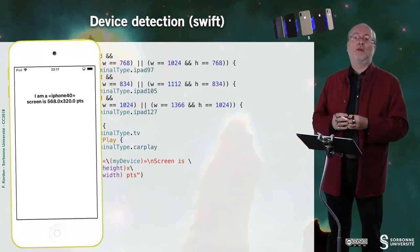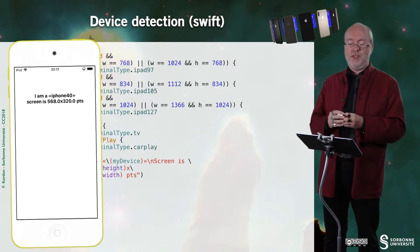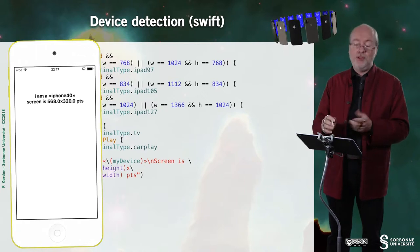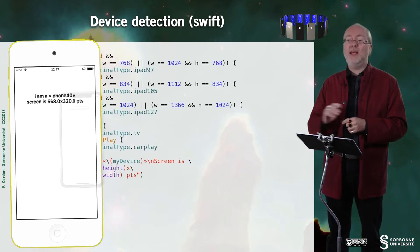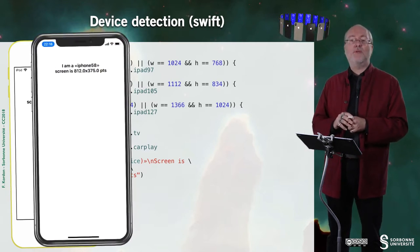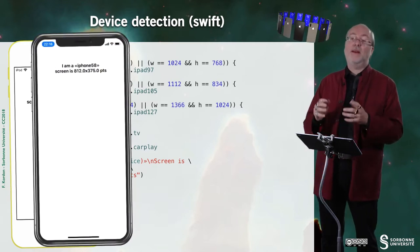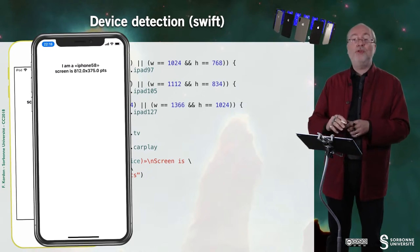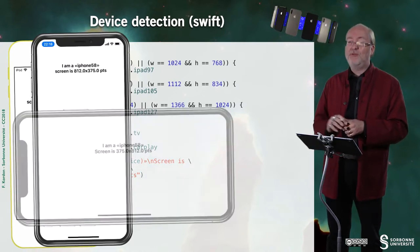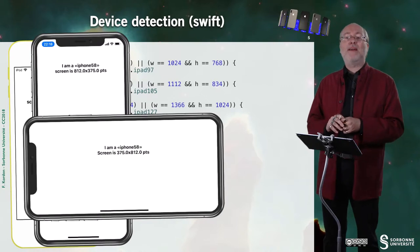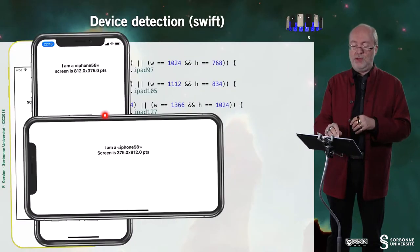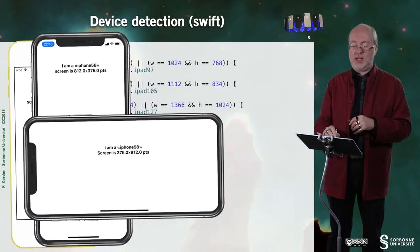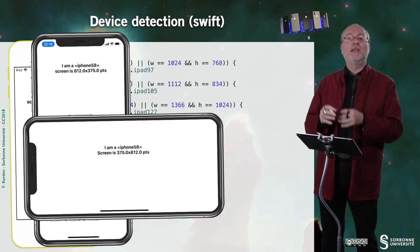For a 4 inch device — which is an iPod here — you see that I do the detection appropriately. And for an iPhone X, I also do the appropriate detection. Of course, the code also works if the app is opened while the device is in landscape mode — you'll notice the dimensions are switched, but the test still works correctly.